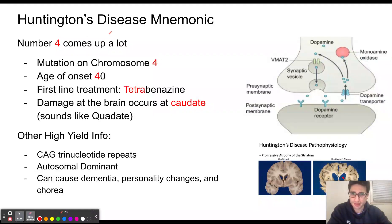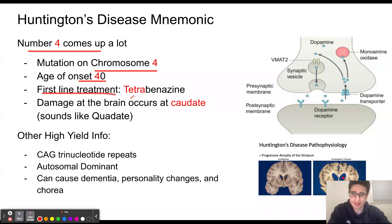With Huntington's disease, the number 4 seems to come up a lot. The mutation is going to occur in chromosome 4, the age of onset is 40, the first line treatment is tetrabenazine, and the damage in the brain occurs at the caudate, which kind of sounds like 'quad-ate,' to remind you of the number 4.